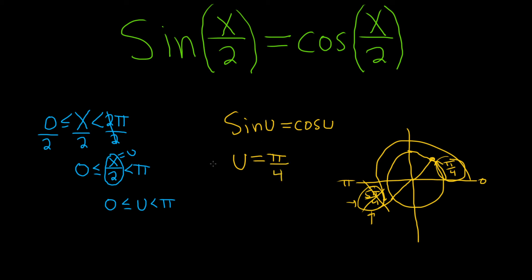But we're looking for x. So now what you do is you go back and you replace your u with what it actually was. Remember, we said that u was x over 2. So that means x over 2 is equal to π over 4. But now we're looking for x. So you just multiply both sides by 2. So we get x equals π divided by 2. And that should be the only solution to this equation.